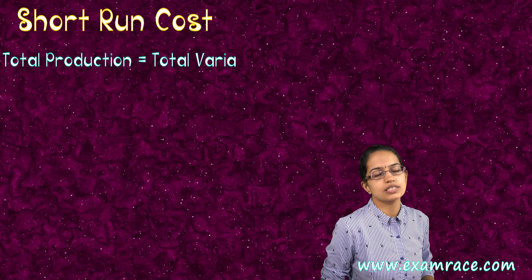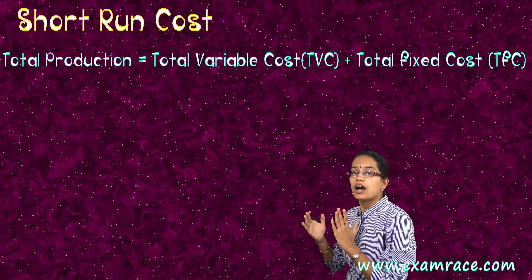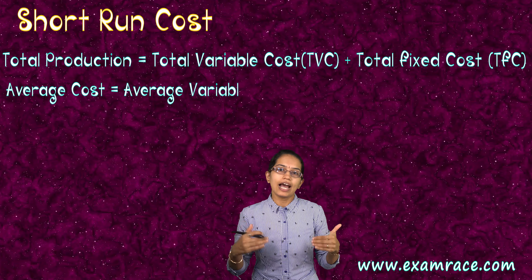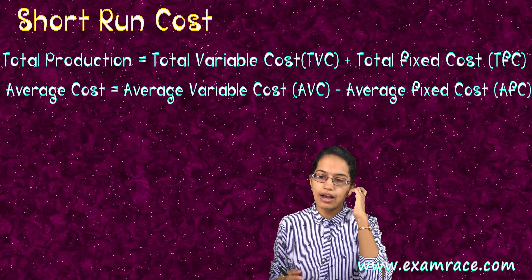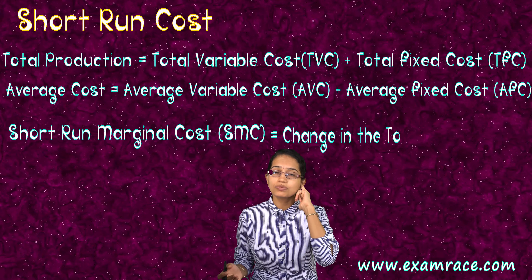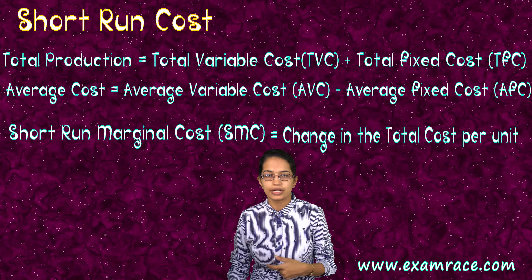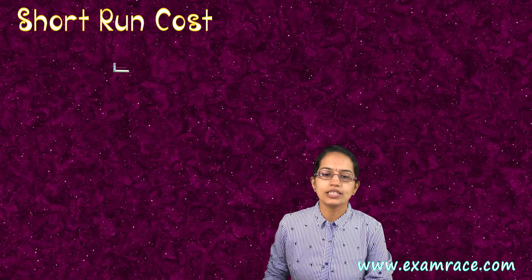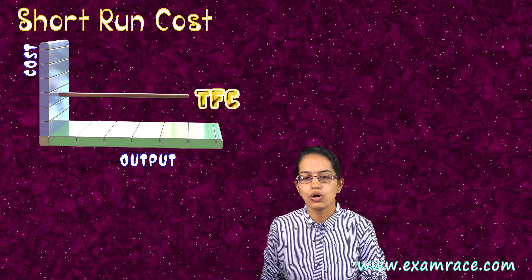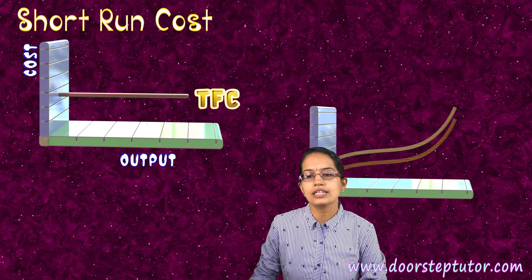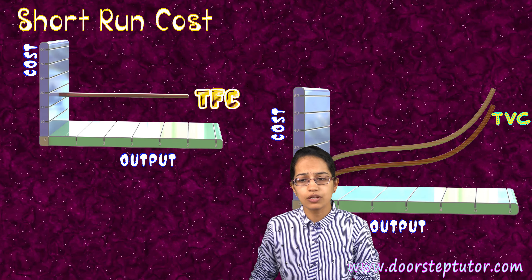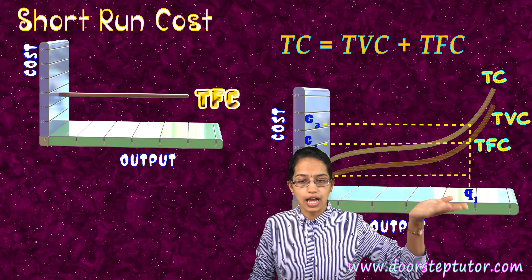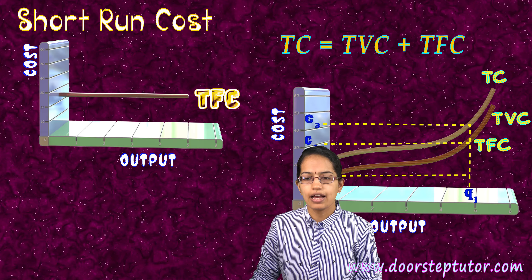Total cost is the sum of total variable cost and total fixed cost. When finding average cost, it is again the sum of average variable cost and average fixed cost. When plotting the short run curves, the total fixed cost remains the same as a flat line. The total variable cost shows an increasing curve, and the total cost, being the sum of total variable cost and total fixed cost, is always higher than the total variable cost.